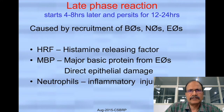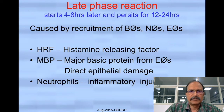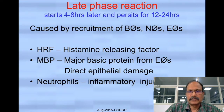Late phase reactions are brought about by recruitment of more inflammatory cells, which starts around 4 to 8 hours later and persists for a prolonged period of 12 to 24 hours. This is mediated by release of histamine releasing factor and major basic protein from eosinophils, which are directly damaging to the epithelial cells. Neutrophils also cause inflammatory reactions because they possess lots of enzymes.